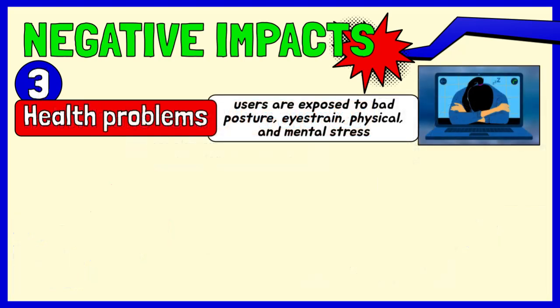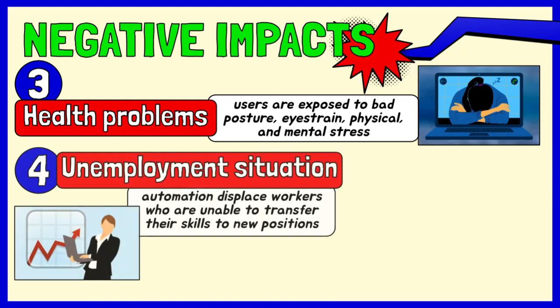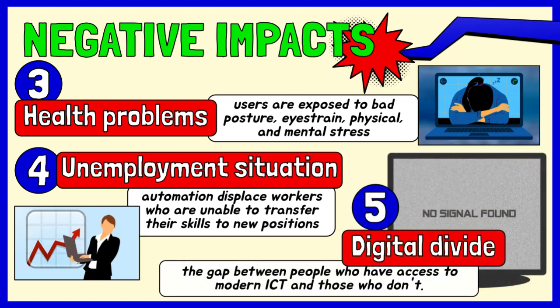Health problems: computer users are exposed to bad posture, eye strain, physical and mental stress. Unemployment situation: ICT has brought automation and robots that displace workers who are unable to transfer their skills to new positions. Instead of using people to build things, computer-controlled robots are used. Robots can run day and night, never needing a break, and don't need to be paid. Digital divide: discrepancy in access to ICT has created the so-called digital divide. The digital divide refers to the gap between people who have access to modern ICT and those who don't.